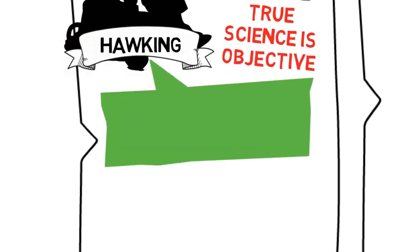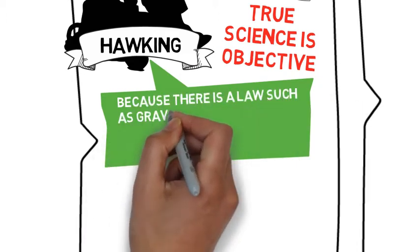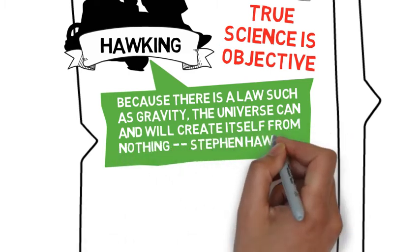What did Hawking say? He said, because there's a law such as gravity, the universe can and will create itself from nothing.